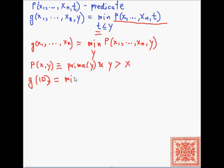Find the first prime number which is strictly greater than 10. So this is going to be a minimal value of y for which P(10, y) is true, and that will be 11, which is the first prime number strictly greater than 10.